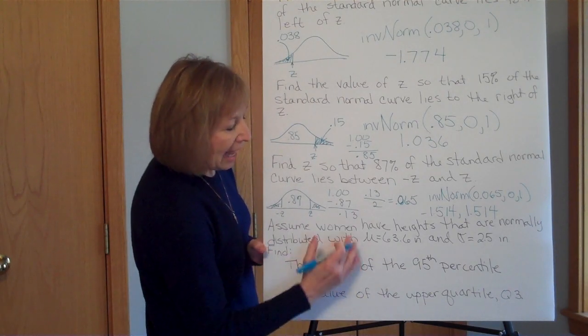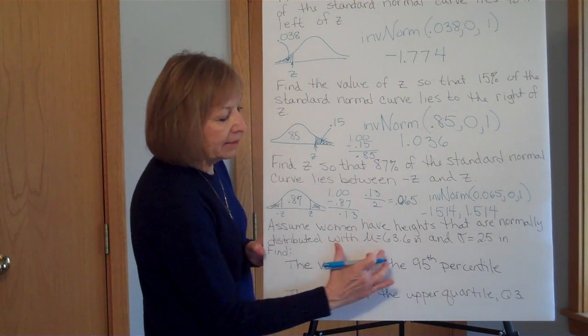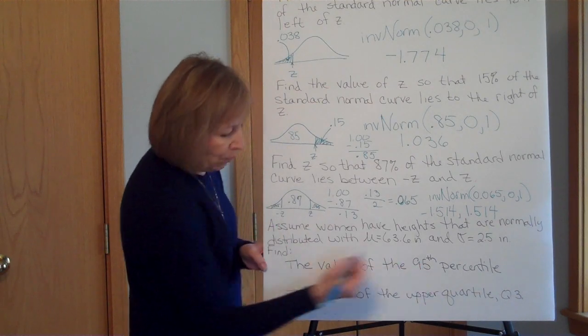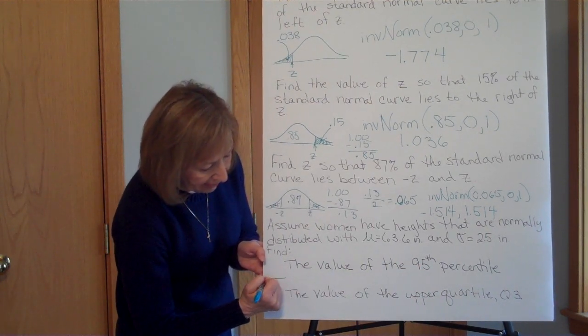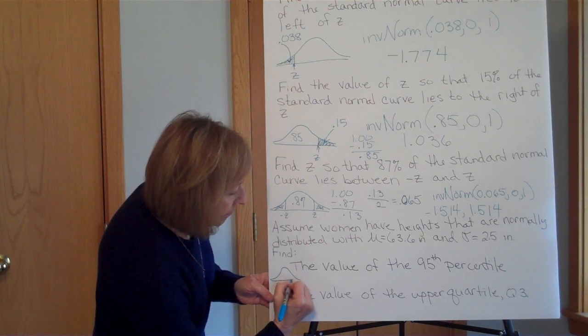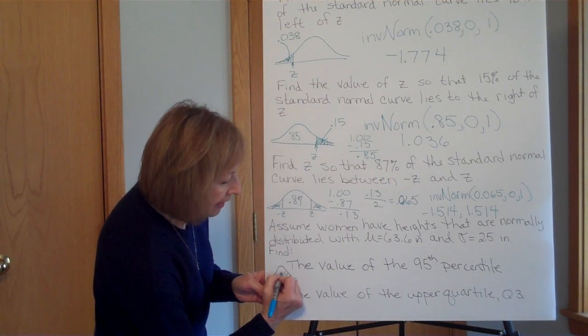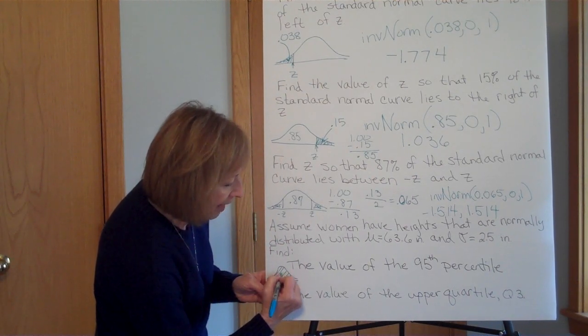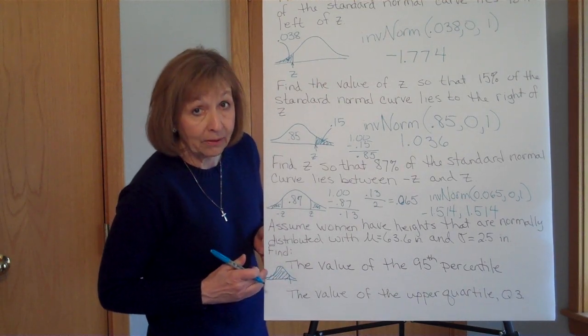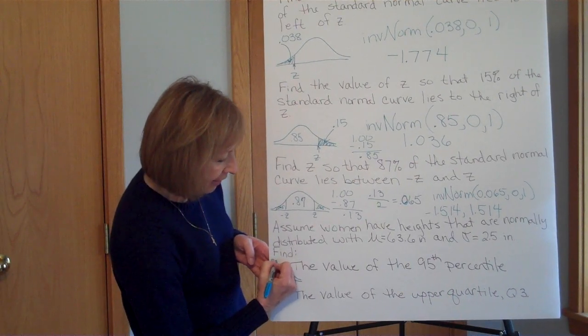So again, I have the percent and then I want the raw score this time that has that happen. Well, what does a 95th percentile mean? The 95th percentile means the data value at which 95% of the rest of the population is at or below that number.